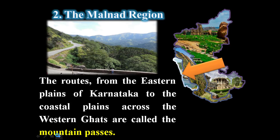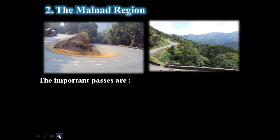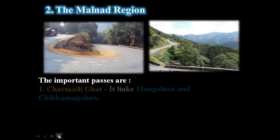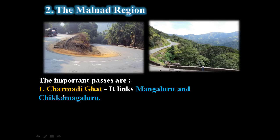In the Malnad region, you can identify some important routes. The passages from the eastern plains of Karnataka to the coastal plains across the Western Ghats are called mountain passes. The very important mountain passes include Charmadi Ghaat, which links Mangaluru and Chikkamagaluru.